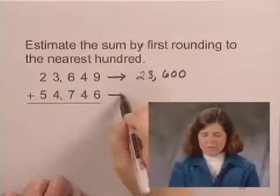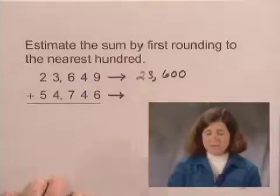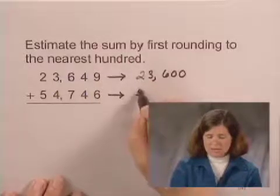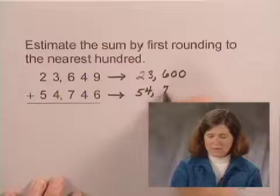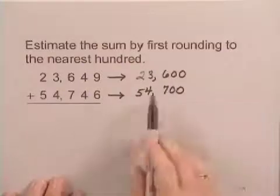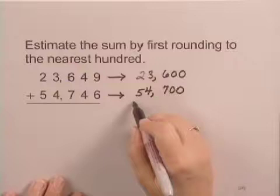Then we will round 54,746 to the nearest hundred, and that is 54,700. And by writing out these rounded numbers, I am showing my work in this situation.